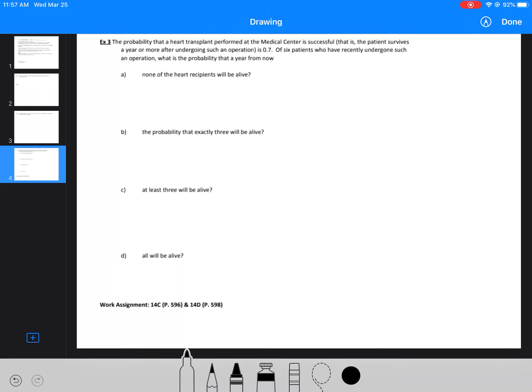This one says the probability that a heart transplant performed at the medical center is successful is 0.7, so that's our P. Of six patients, that's our N, who have recently undergone such an operation, what is the probability that a year from now - and then these are going to give us our R's all down here. So let's define our variable. Let's let X represent the number of patients that survive.